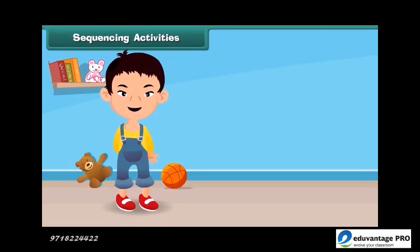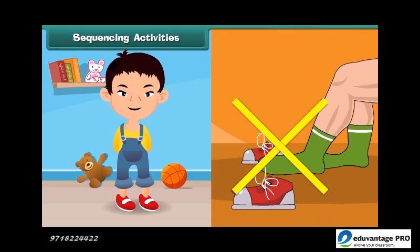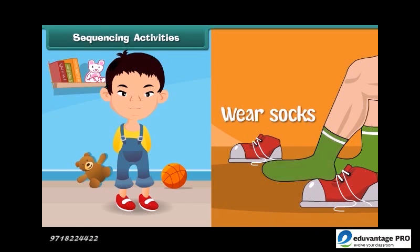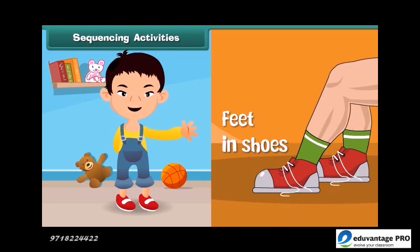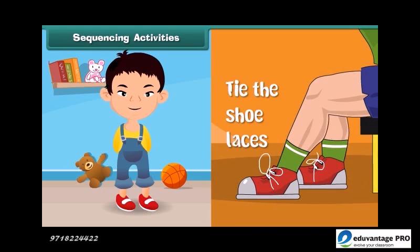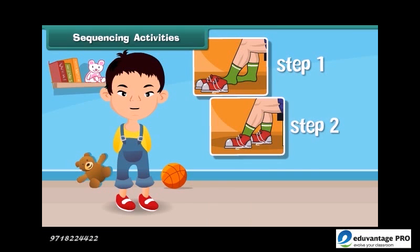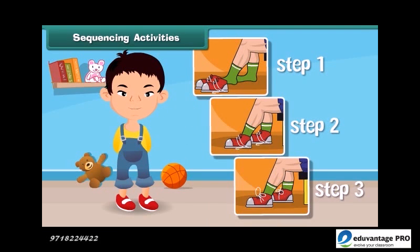When we do any work in our daily life, we have to do it in a sequential manner. For example, for wearing shoes, we can't tie our laces before putting our feet in. First, we have to wear socks so that we can wear our shoes properly. Then we put our feet in shoes and then we tie the shoe laces. All these steps are performed in a sequential manner to wear them.